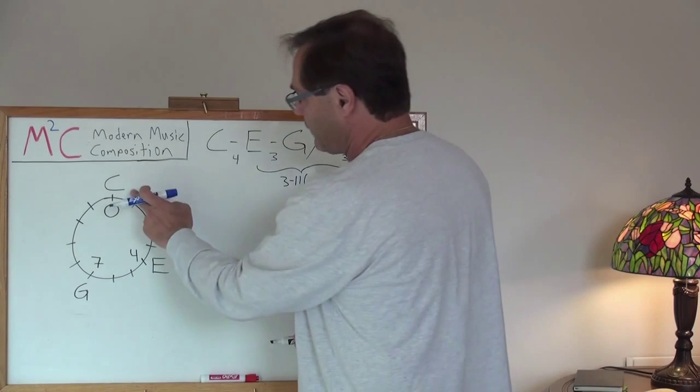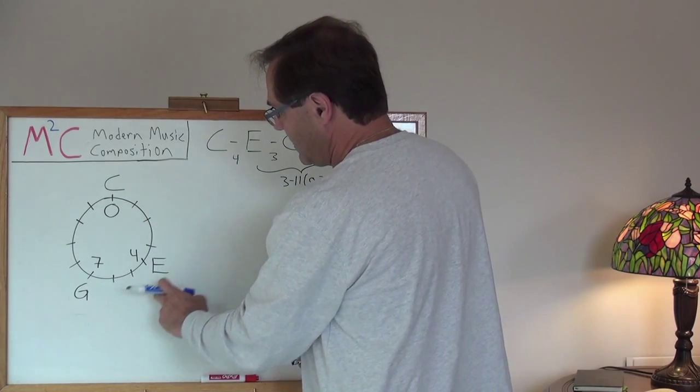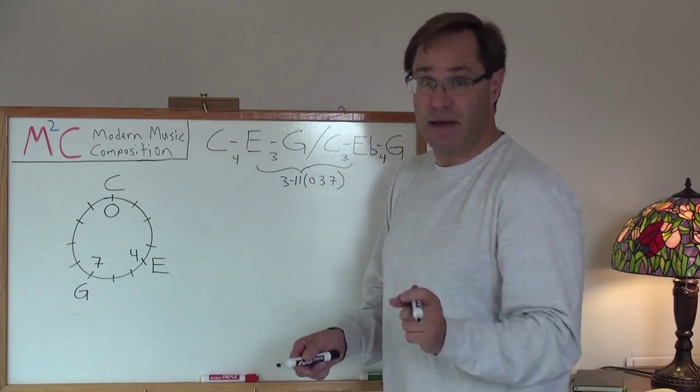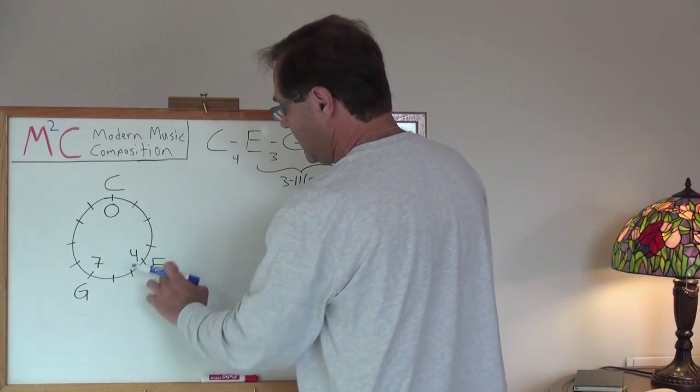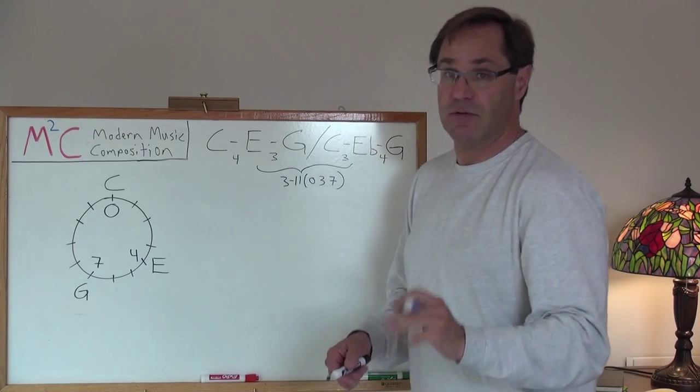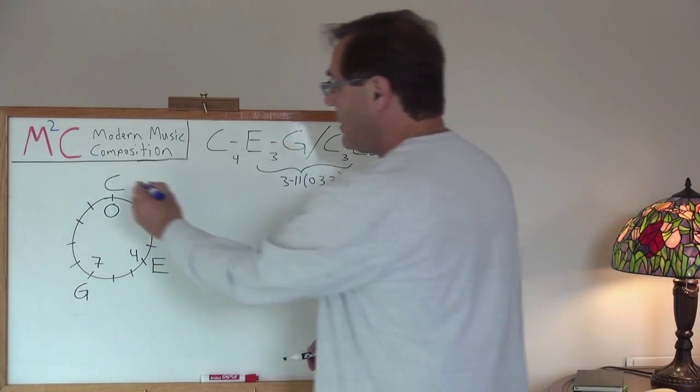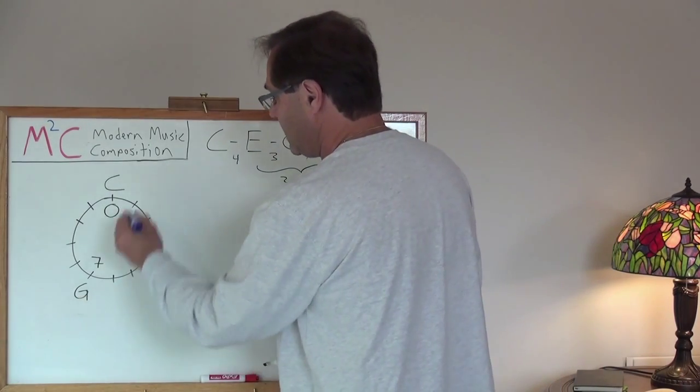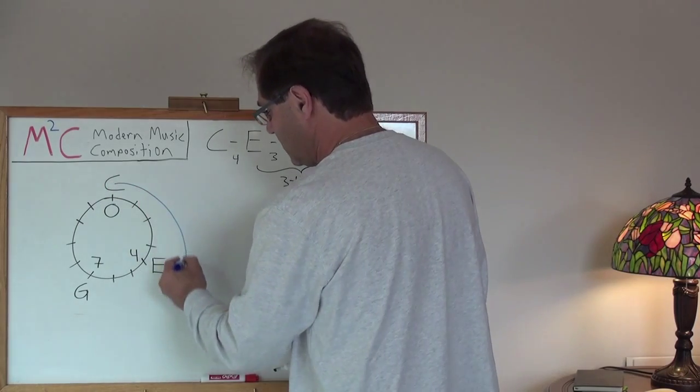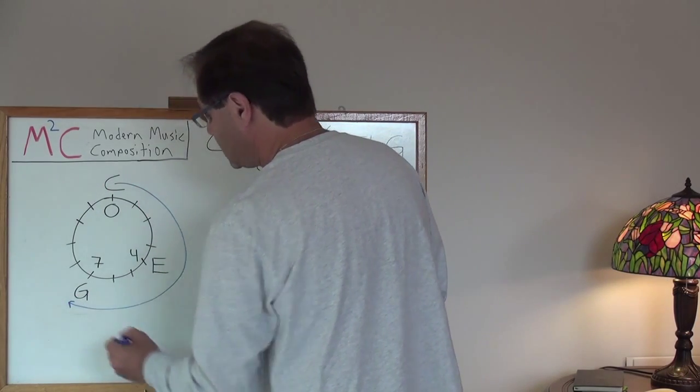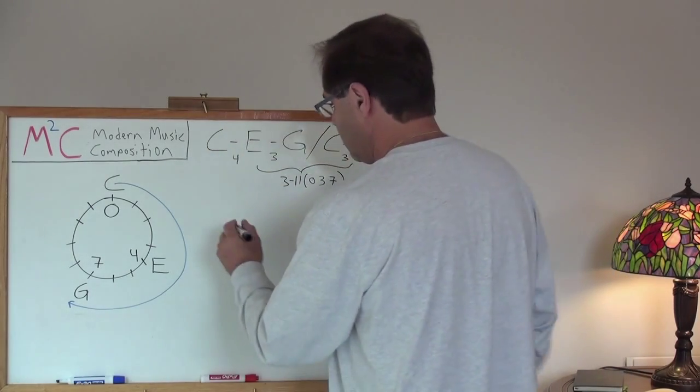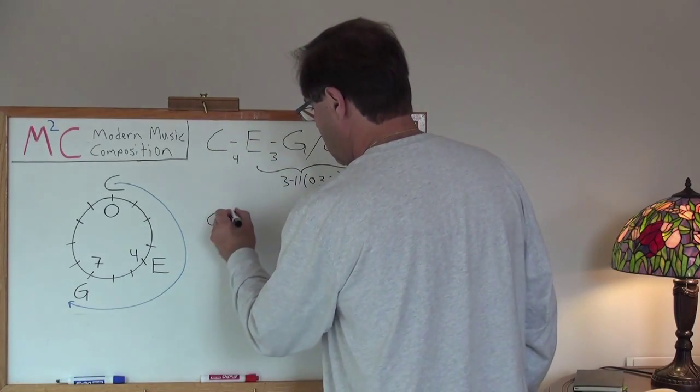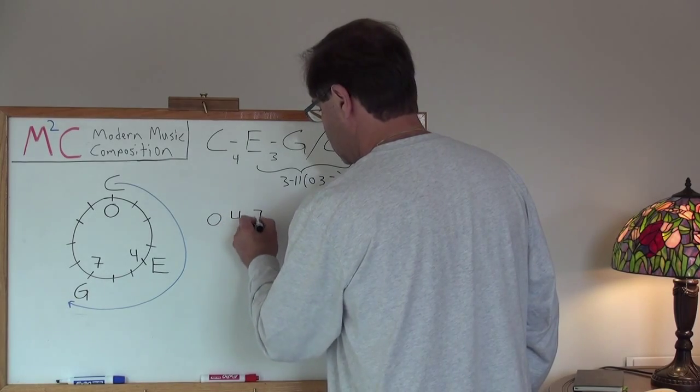If I were to start from C and take it to G, that would be 7 semitones. If I were to start it from G and take it to E, that would be 9 semitones. Well, it's obvious what you want to do is traverse from C to G. That's the shortest path possible, 7 semitones. So let's write that out. 0, 4, 7.